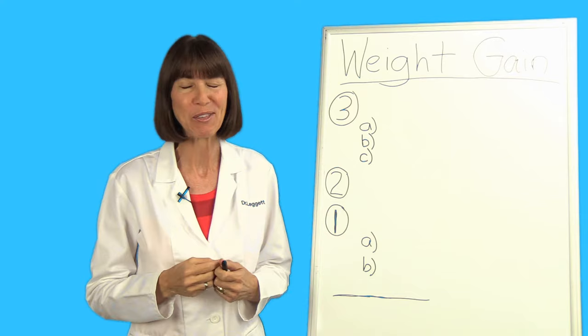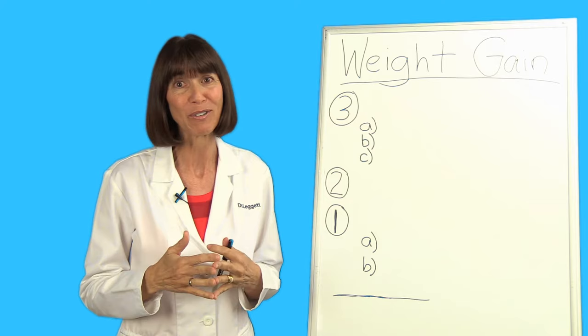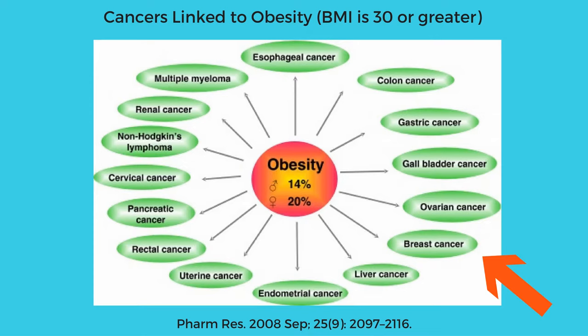Excess weight has been shown to influence the risk of developing breast cancer. In fact, obesity influences the risk of developing many forms of cancer in general by about 20% in women. This picture shows just some of the cancers influenced by obesity: breast, ovarian, uterine, cervical, pancreatic, liver, gallbladder, stomach, colon, rectal, to name a few.